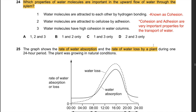Question 24: Which properties of water are important in the upward flow of water through xylem? Property 1 — water molecules attracted to each other by hydrogen bonding — is cohesion. Property 2 — water attracted to cellulose — is adhesion. Property 3 — high cohesion in water columns — also refers to cohesion. All three properties are important. The answer is A: 1, 2, and 3.